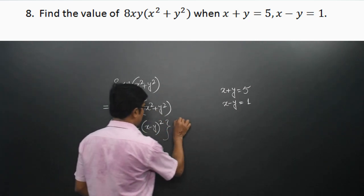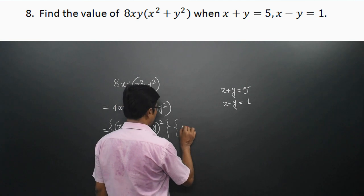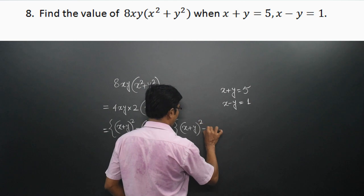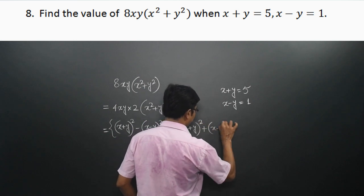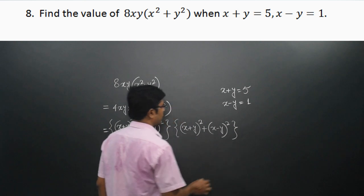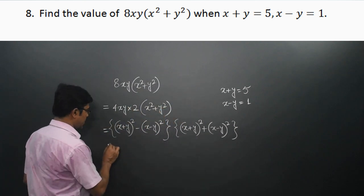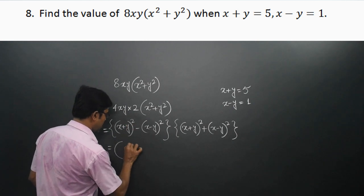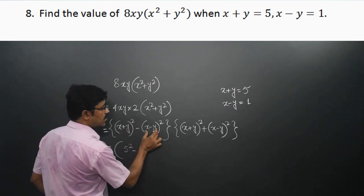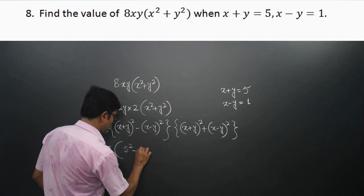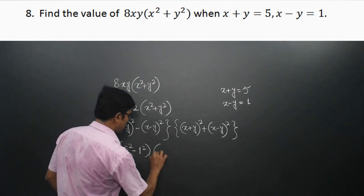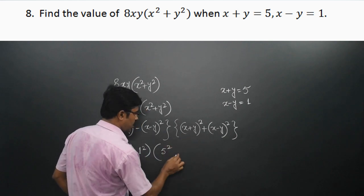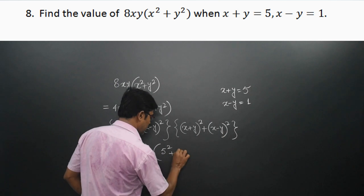So we have 2 × [(x + y)² − (x − y)²] × (x² + y²). The value of x + y is 5 and x − y is 1. Substituting: it is 5² − 1², and for (x² + y²) it is 5² + 1².